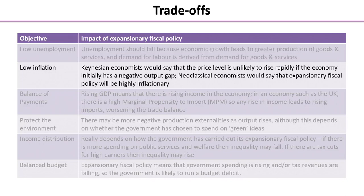Regarding the impact on inflation, Keynesian economists would likely say that the price level won't rise rapidly because the economy will probably have a negative output gap to start with — there would be no reason to undertake expansionary fiscal policy unless the economy was in that position. Neoclassical economists, however, say that this expansionary fiscal policy will be highly inflationary. We'll explore that difference in a later video in this online lesson.